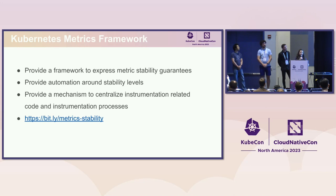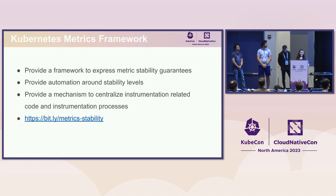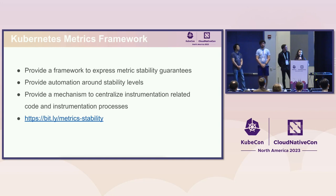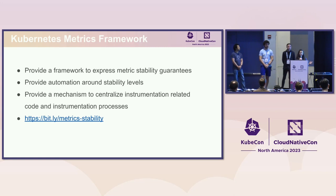To prevent this from happening again, SIG instrumentation came up with the concept of a metrics framework around Kubernetes metrics to express certain stability guarantees. This framework also helped us have automation in the form of checks to prevent contributors from introducing changes to metrics that can cause breakage for end users. It also provided a mechanism to centralize all instrumentation-related code and processes in one place. Here is a link you can visit to read more about the Kubernetes metrics framework.